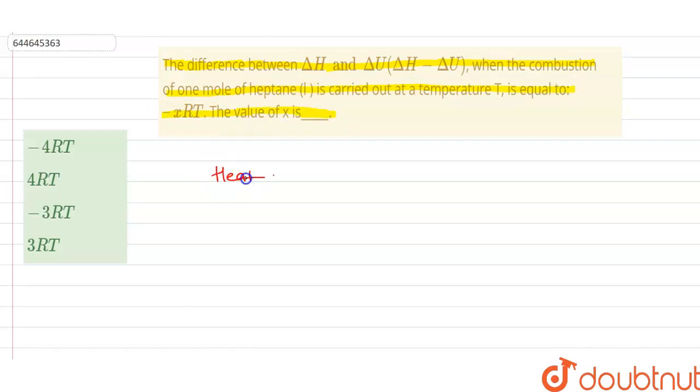First of all, we have to know what is the heat of reaction. Heat of reaction is actually the amount of heat either added or removed in order to make the temperature same throughout the substances in the reaction.